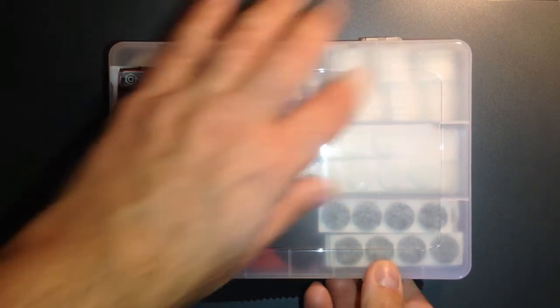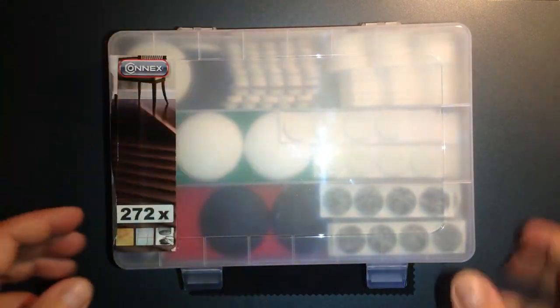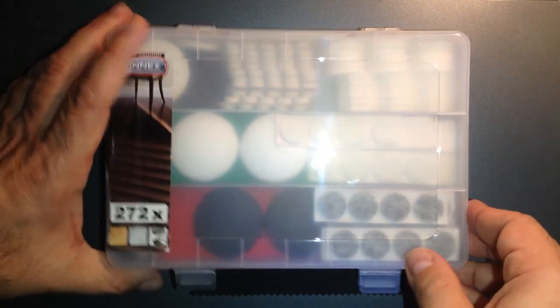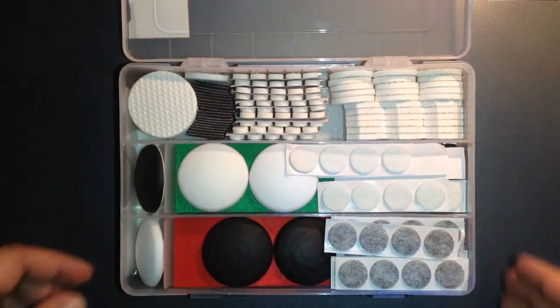E voi mi direte, ma che cosa rappresenta una valigetta di Feltrini nella Darcy Zone? Non è semplice, sono gli acquisti che io faccio e ve li metto. Non c'è una logica, però è tutto meraviglioso.